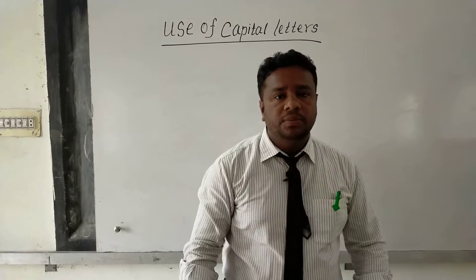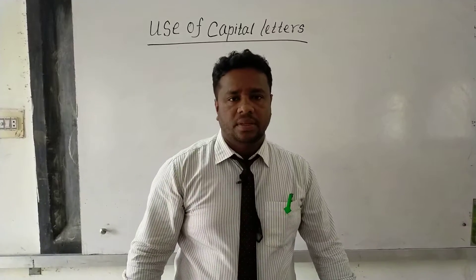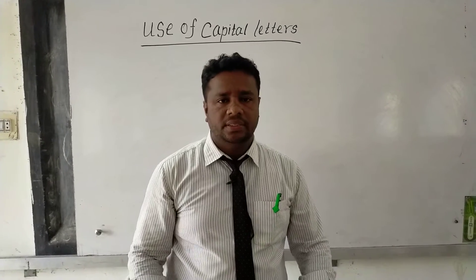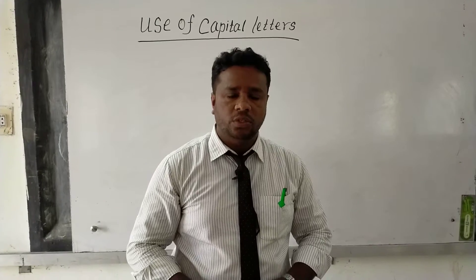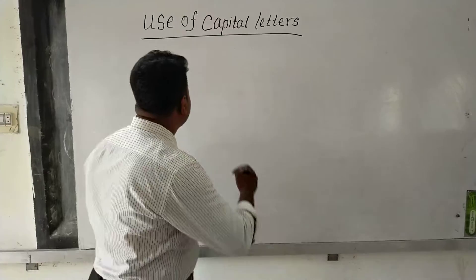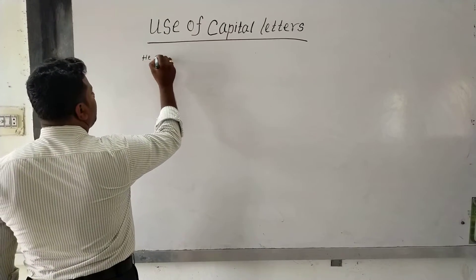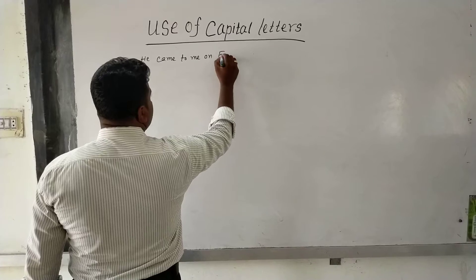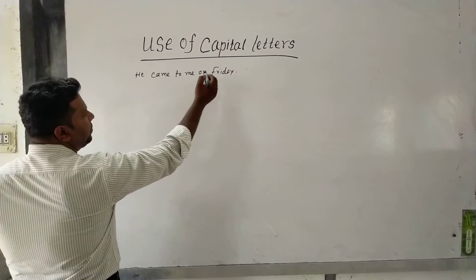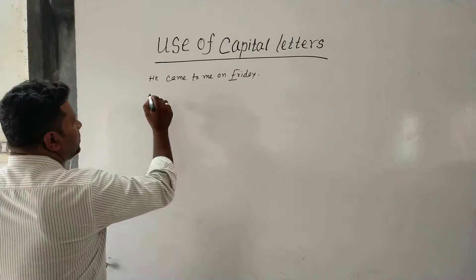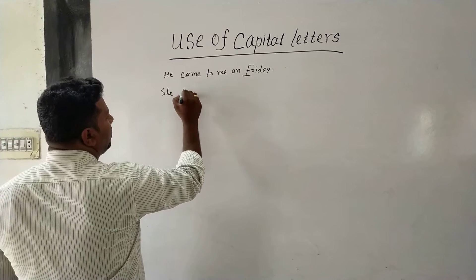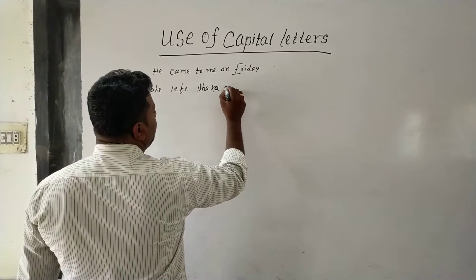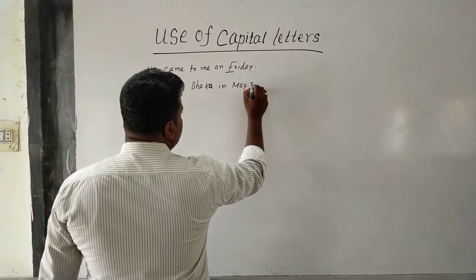Rule five: the names of the days of the week and the names of the months begin with capital letters. For example, 'He came to me on Friday.' Here, 'Friday' is the name of a day, so it begins with a capital letter. Another example: 'She left Dhaka in May 2022.'